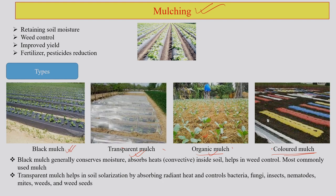Why do we do mulching? Mulching is largely done for retaining soil moisture. When you do this kind of covering of soil, it reduces evapotranspiration from the soil under sunlight, so the moisture in the soil remains. It also helps in weed control — any plant which is unwanted within a cropping system we call weed. Proper mulching will improve crop yield and application of fertilizer and pesticides can be reduced.